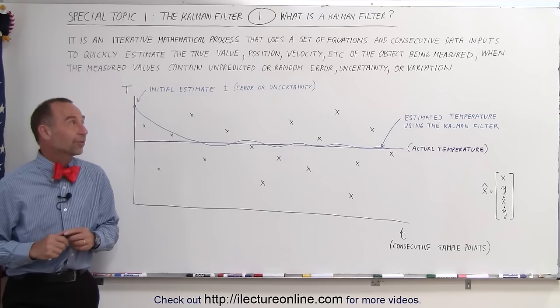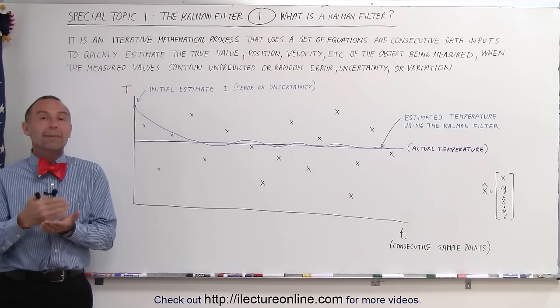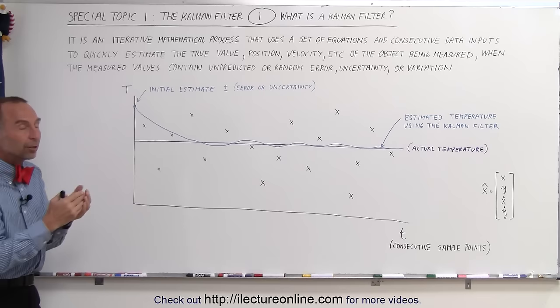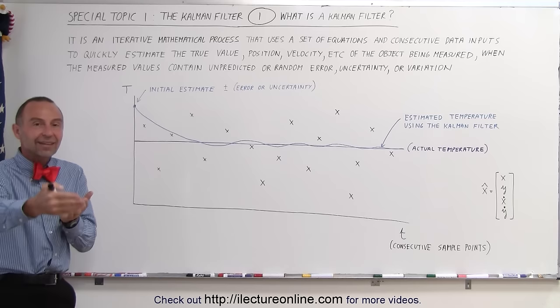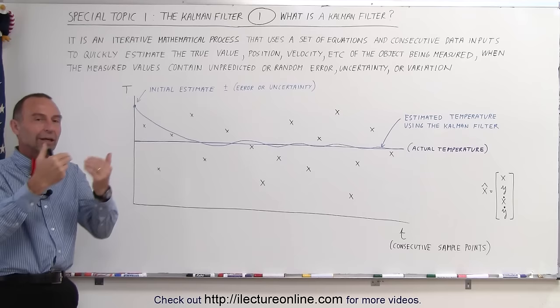So what is a Kalman filter? Well, it is an iterative mathematical process. You follow a set of iterations, a mathematical process that uses a set of equations and consecutive data inputs. So we get a data input, we use the equation, we calculate the new estimate, we get another data input, we calculate the new estimate, we get another data input, we calculate the new estimate again.